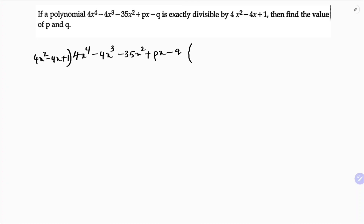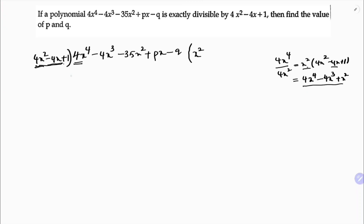Now let's see how to do this division. Take the first term: 4x⁴, and divide it by the first term of the divisor, which is 4x². The 4s cancel, leaving x². Now multiply x² by the full divisor 4x² minus 4x plus 1, giving 4x⁴ minus 4x³ plus x².